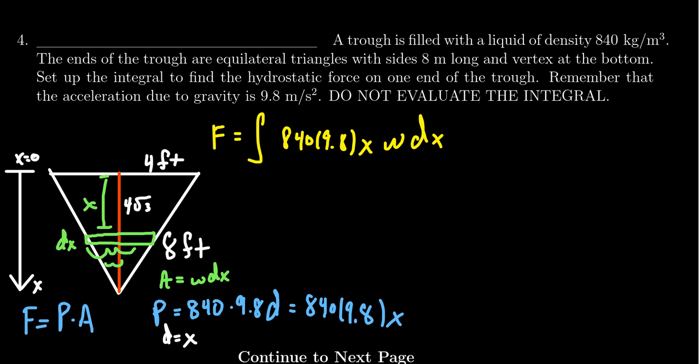As we're integrating with respect to x, we then ask ourselves, what is the depth of this thing? Like, how far do we go? We go from the top to the bottom. And so we're going to integrate from 0 to 4 times the square root of 3. So that bound did come into play there.